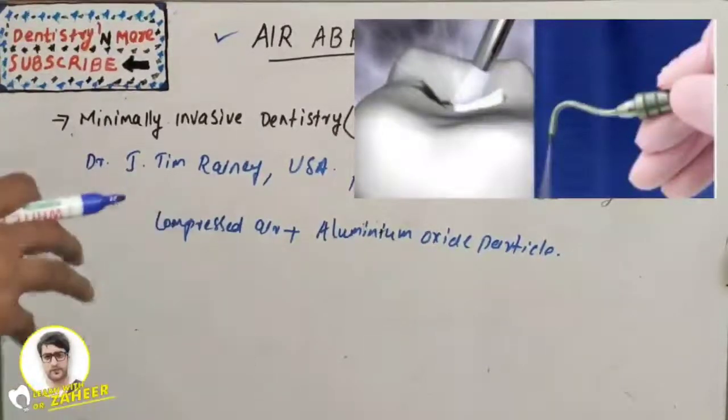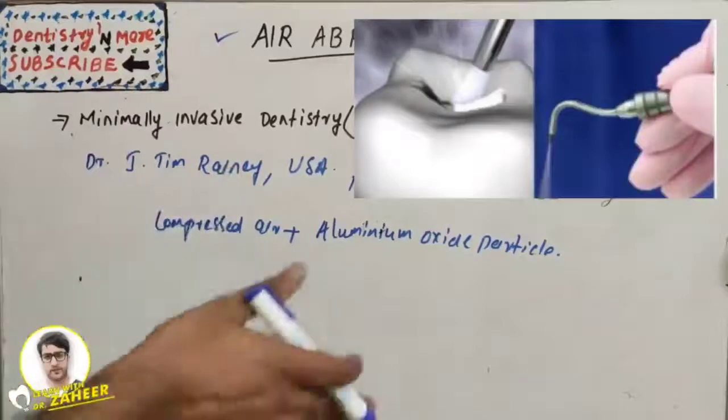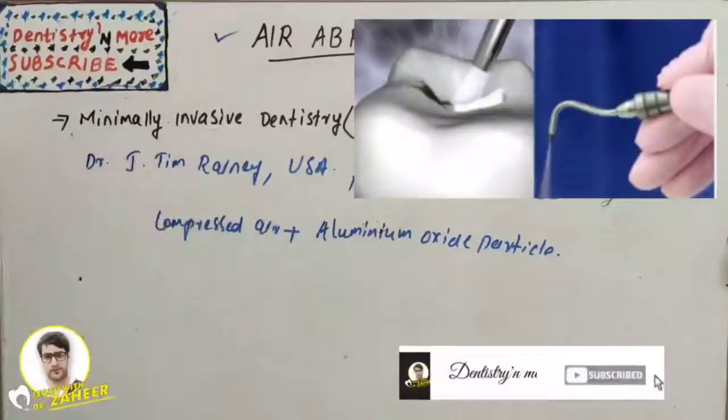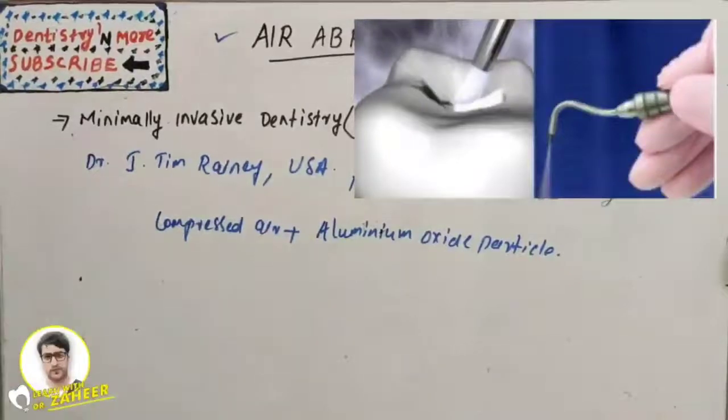Usually we do cavity preparation by using an air rotor or micromotor, so the bur does the job - it is a very invasive procedure. But this is like compressed air and aluminum oxide particles projected with such a force to be able to cut the tooth structure.